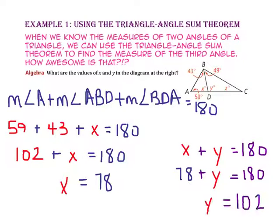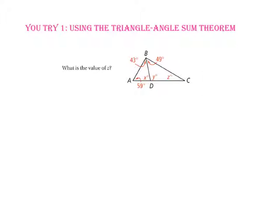Now we've found the value for X and Y. Pause the video and do U-try number 1. The value for X was 78 and the value for Y was 102.